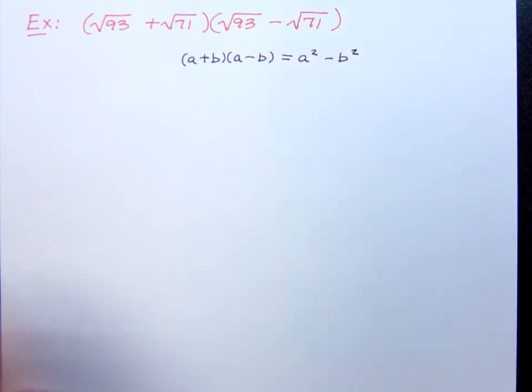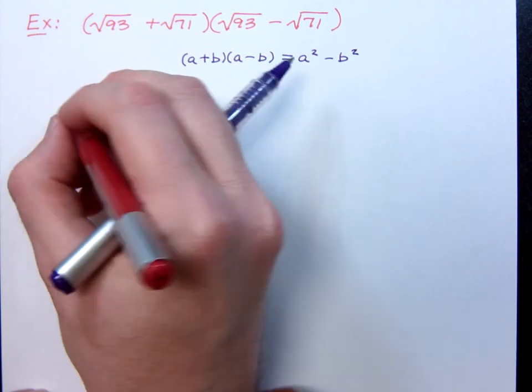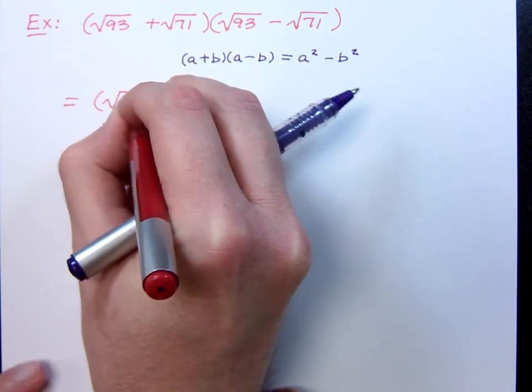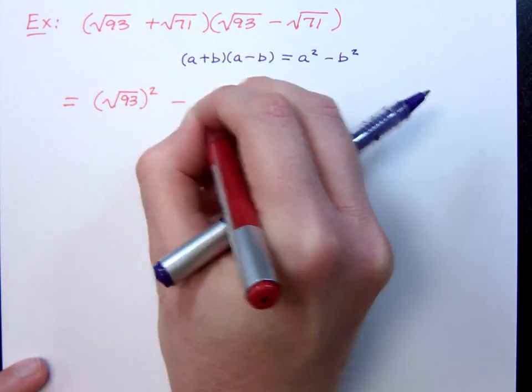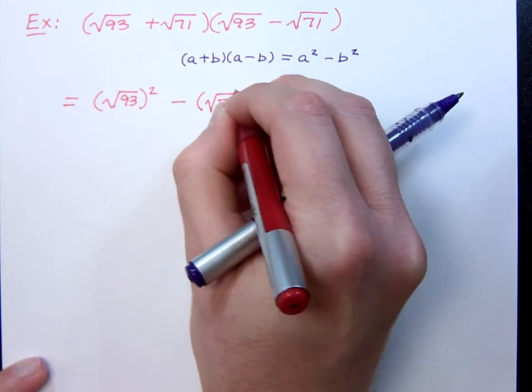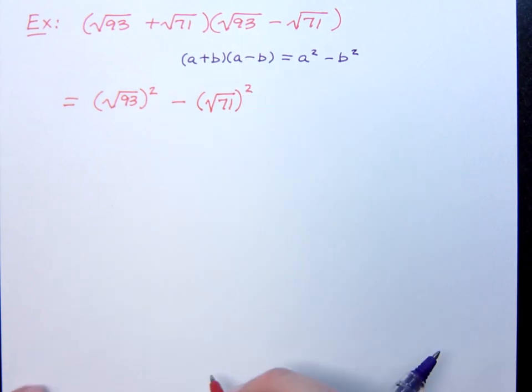Right? So, according to that, it would be the square root of 93 squared minus what? The square root of 71 squared.